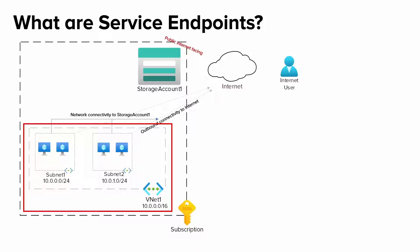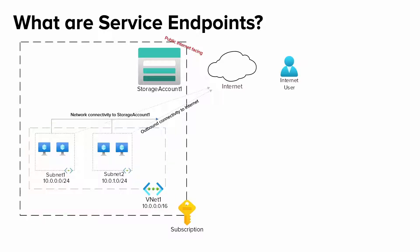These VMs can communicate with the internet by default. With a public IP, you can communicate inbound with these Azure VMs. With NSG or firewalls, you can control both inbound and outbound network traffic.